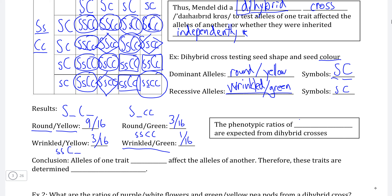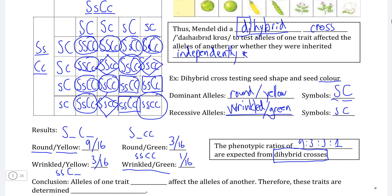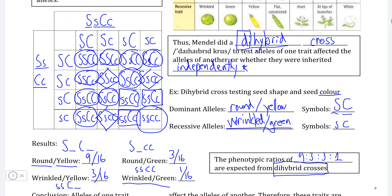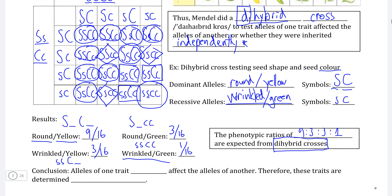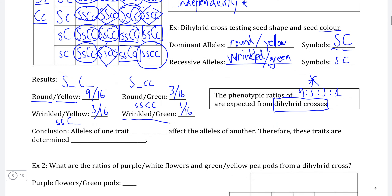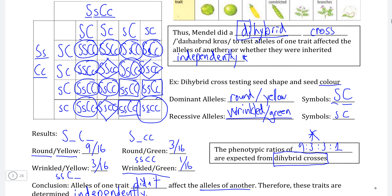This phenotypic ratio is what we call the nine to three to three to one ratio. Regardless of which characteristics exhibiting dominant and recessive inheritance patterns we apply to a dihybrid cross, all phenotypic ratios will be based on this ratio. This is exactly what Mendel found — that alleles of one trait didn't generally affect the alleles of another trait, and therefore each trait was determined independently, allowing relatively easy probability predictions.